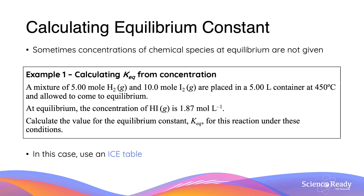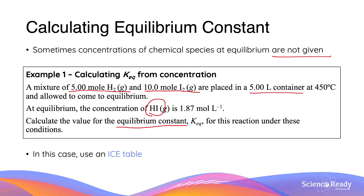Sometimes the concentrations of chemical species at equilibrium are not directly given — teachers love to give these more difficult questions. For example: a mixture of 5 moles of hydrogen gas and 10 moles of iodine gas are placed in a 5-litre container and allowed to reach equilibrium. At equilibrium, the concentration of hydrogen iodide is 1.87 mol/L. The initial moles given are not equilibrium quantities. For questions like these, we use what's known as an ICE table.